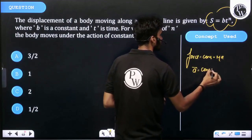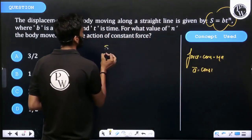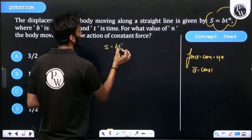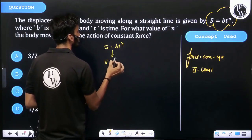Displacement is equal to bt^n. Differentiate: velocity is equal to ds by dt, that is equal to nbt^(n-1).